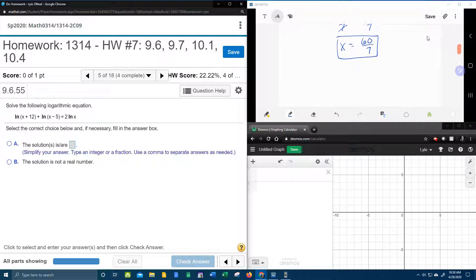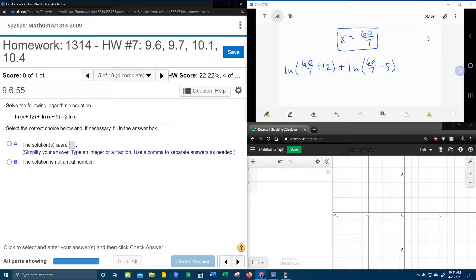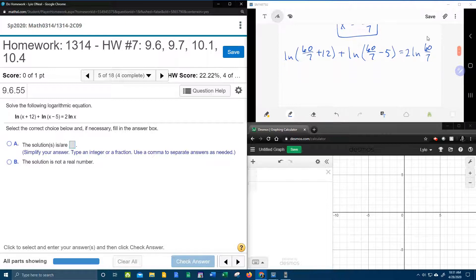And I don't know if you checked out my last video, but I said we probably should check the solution just to make sure it works. And we're going to do that. So here we go. We've got the natural log of x plus 12. I'm going back to the original equation and replacing every x with 60 over 7. So next, 60 over 7 minus 5 equals 2 natural log 60 over 7. And then we're going to plug this into the calculator and see if it checks out.